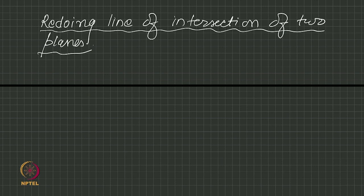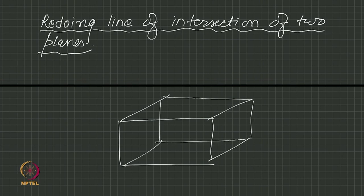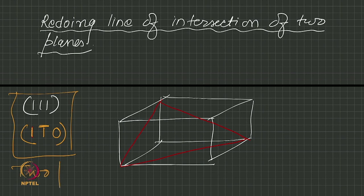Remember that we had, we geometrically drew in within the unit cell, we were given two planes 1 1 1. We drew the 1 1 1 plane and then we had 1 bar 1 0 plane. We took the origin there, our axis system is x y and z. If I choose the origin here 1 along x 1 along y and 1 along z, I get the red plane 1 1 1.